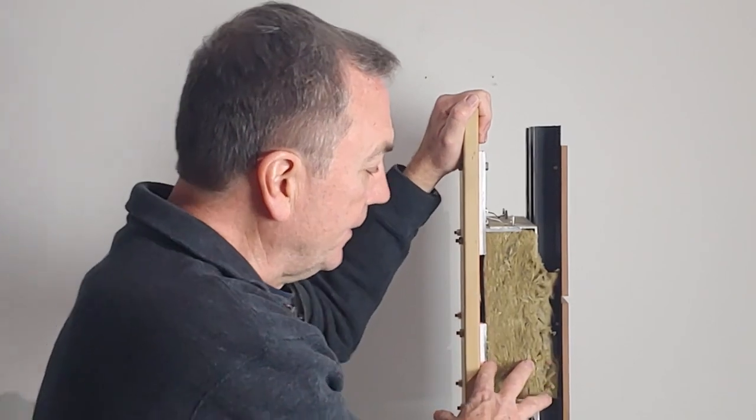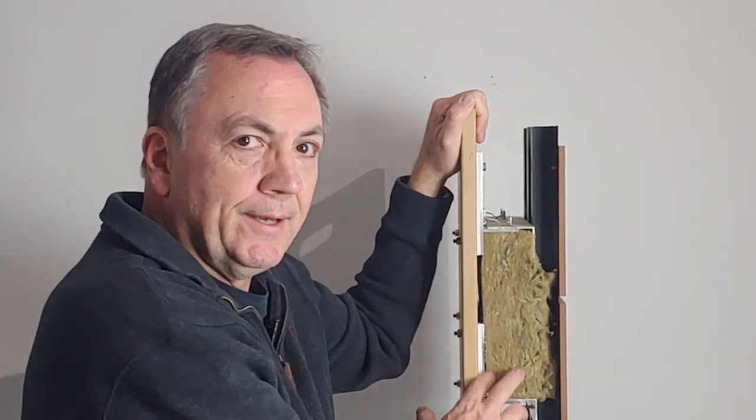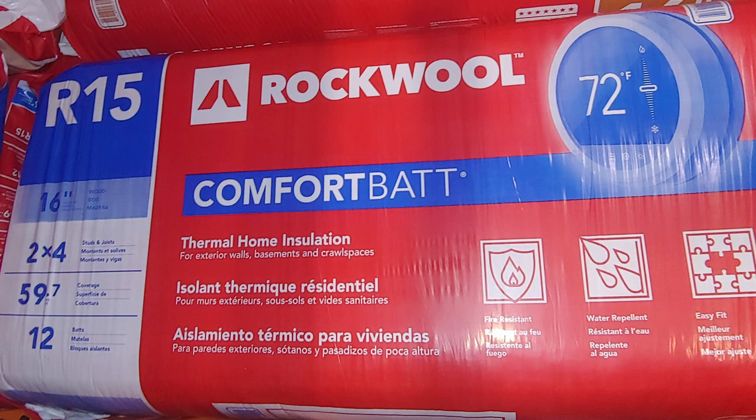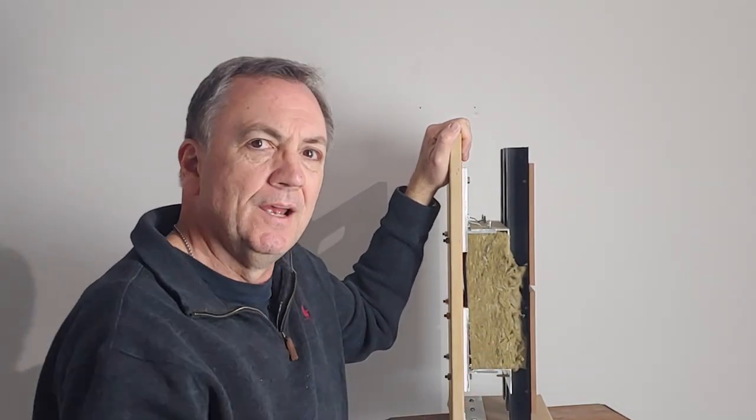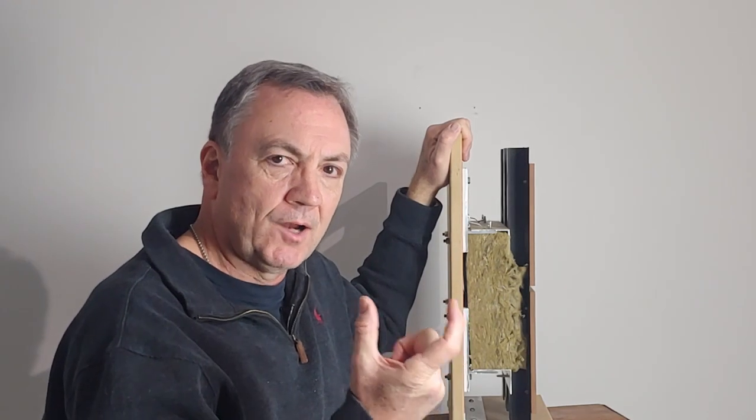And inside of here it's holding the insulation, and what they're showing here is rock wool. Now rock wool for this size—it's about three and a half inches, I think this is a little bit less—but three and a half inches of rock wool will give you about an R15 value for insulation.